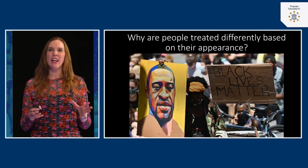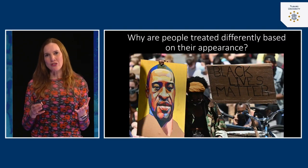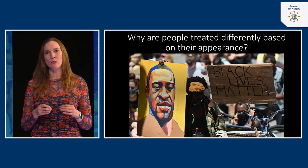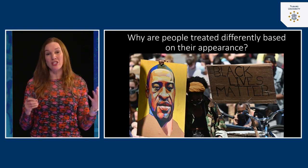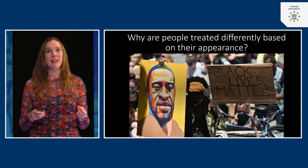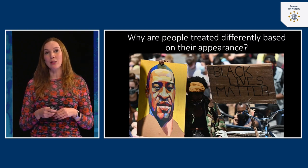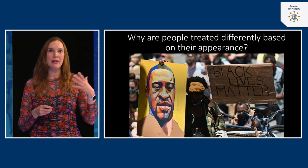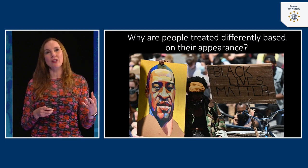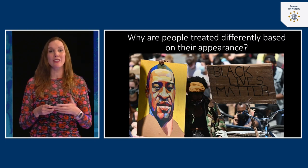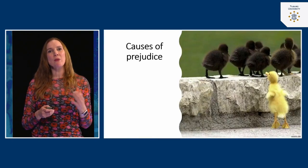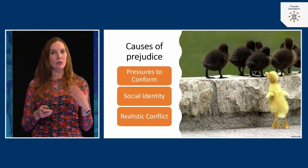Now we know how unfair and horrible prejudice is, and what devastating consequences it can have if you are part of a minority group. So let's turn to one of the key questions of this lecture: what causes us to have prejudice in the first place? Why do we treat people differently based on their appearance — their skin color, gender, culture, religion, or sexual preference? There are basically three different causes of prejudice.